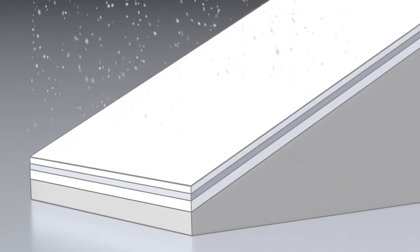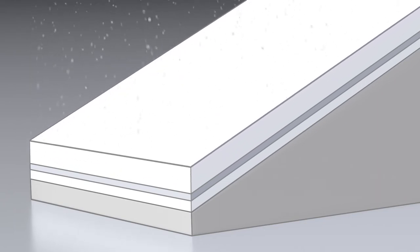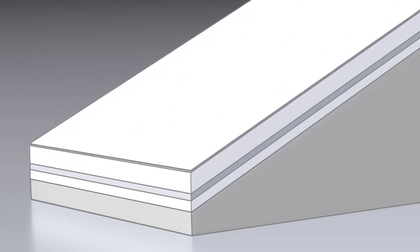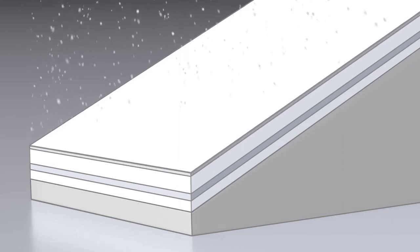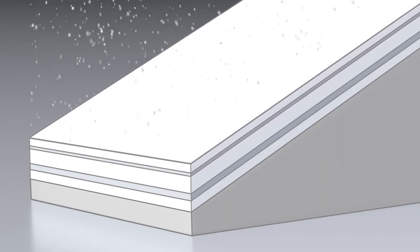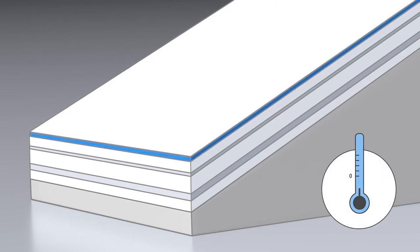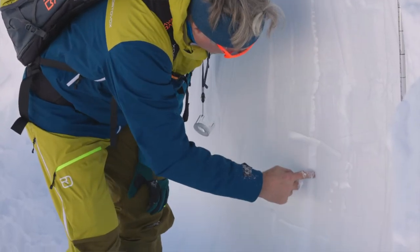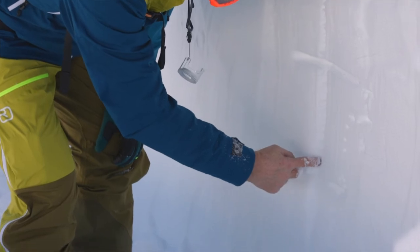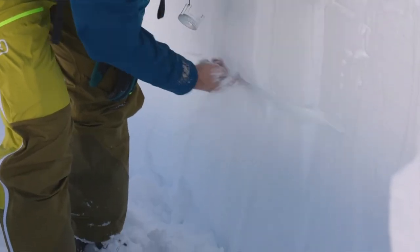I can find the entire progression of weather conditions throughout the winter in the snowpack. I'll find warm periods and warm phases in the form of melt-freeze metamorphism in the snowpack structure. Faceted crystals are evidence of long, cold periods. If it has rained, I'll find an ice crust caused by the rain. The snowpack is effectively a mirror image of the progression of the weather. All avalanche problems can be exactly ascribed to these different weather influencing factors.